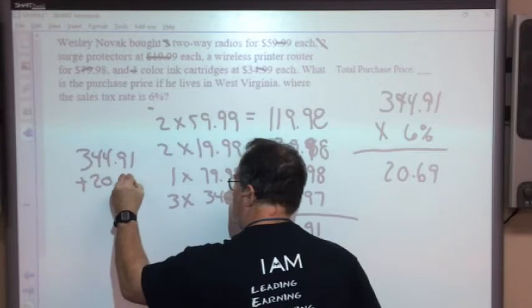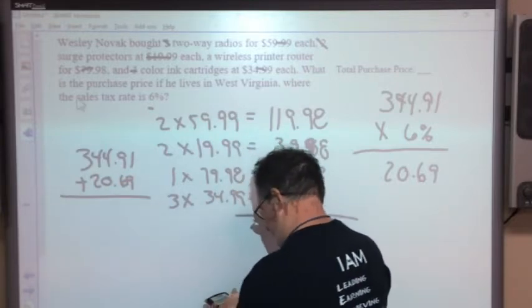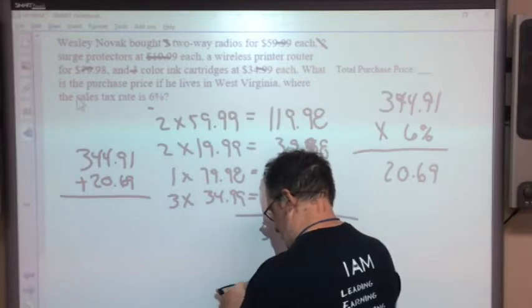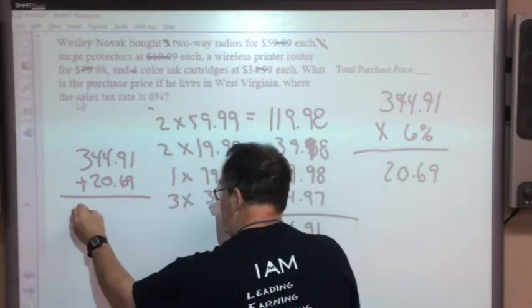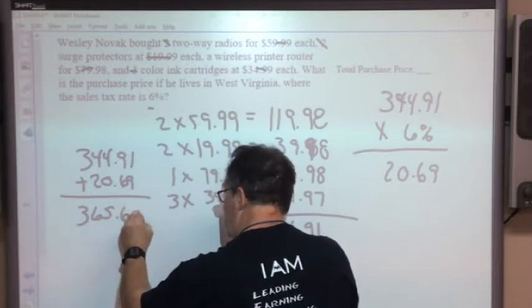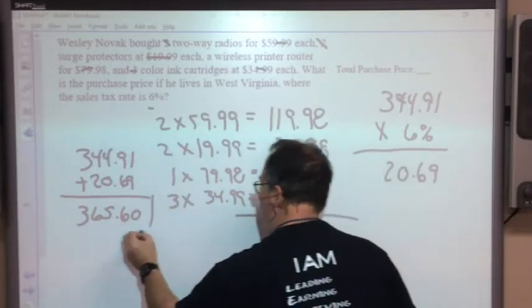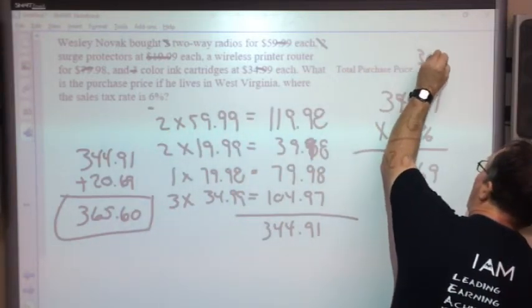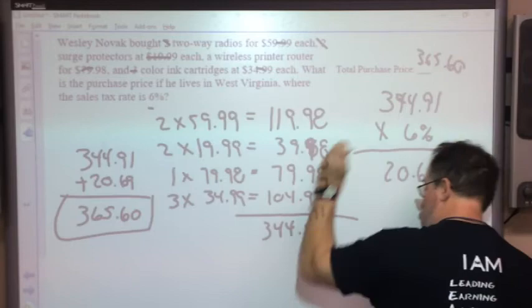I'm going to add that to the selling price. So selling price plus sales tax will give you purchase price. Add them all up and I will have a final one, which is $365.60. And there you go.